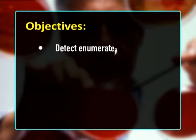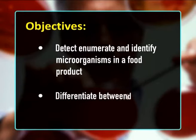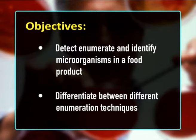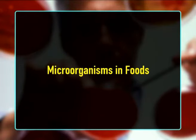Hello dear students, today our topic of deliberation is enumeration of microorganisms in foods. Before going through this lecture, let's have a look at its objectives: to detect, enumerate and identify microorganisms in a food product; to be able to differentiate between different enumeration techniques and learn when each should be used.